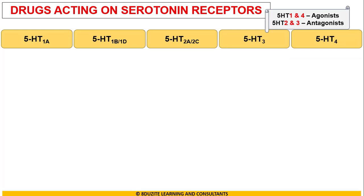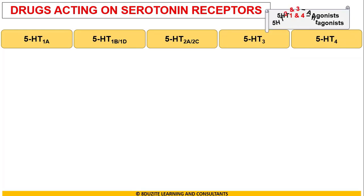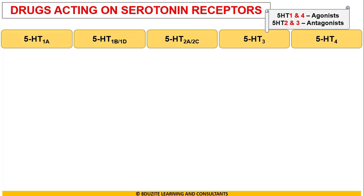If you look at the top right of the screen, the extreme right receptors — 5-HT1 and 5-HT4 — the important drugs are all agonists. The receptors in the middle, 5-HT2 and 5-HT3, the drugs are all antagonists.